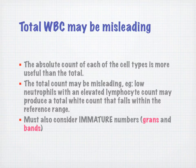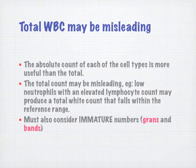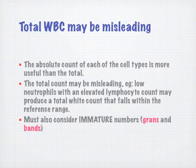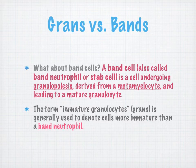The total count is going to be misleading if, for example, you have low neutrophils with an elevated lymphocyte count — you may have a total white count that falls within the reference range. We also have to consider immature numbers like grands and bands. The term 'grands' refers to immature granulocytes, and 'bands' refers to band neutrophils — these are less mature cell forms.